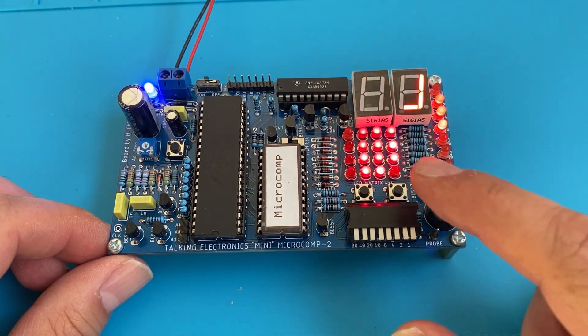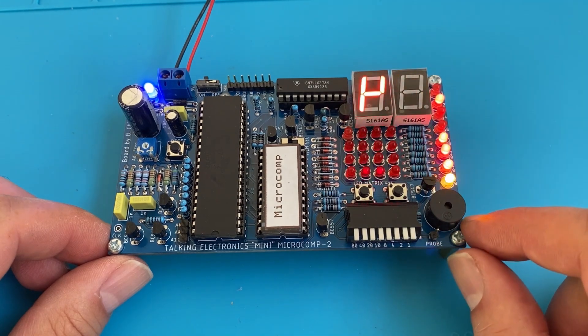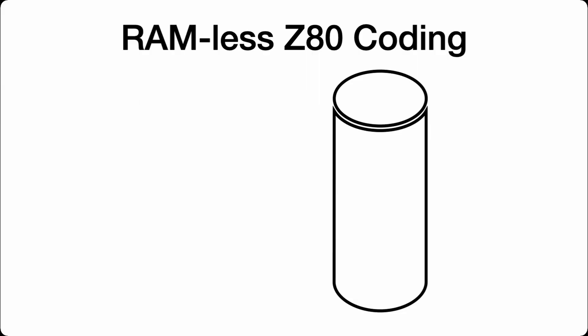Before I get stuck into this program, let's have a look at what's in and more importantly what's out of the Z80 language when you don't have any RAM. One of the important features of the Z80 CPU is the ability to use a stack. The stack is a temporary storage area specifically for CPU operations, and if using the stack it needs to be placed in RAM. The stack is primarily used for storing register data and addresses.